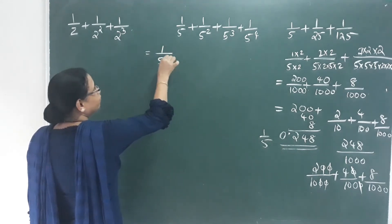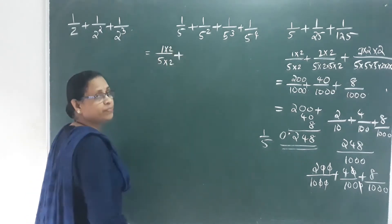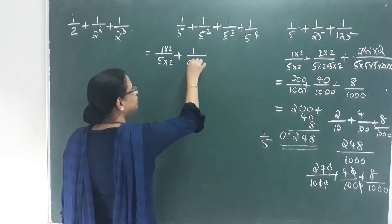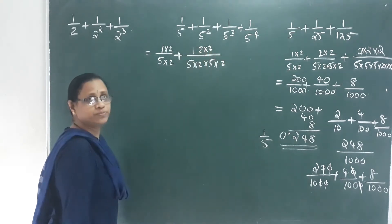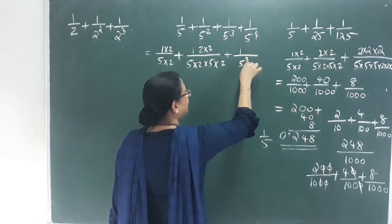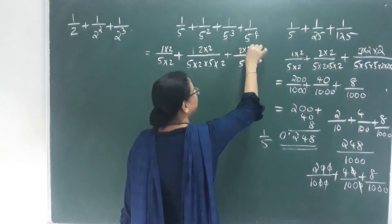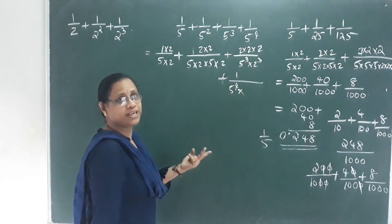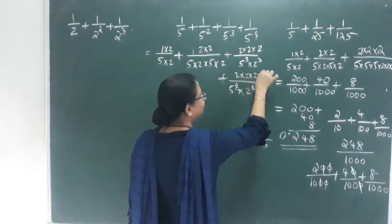Now for 1 by 5. We multiply 2 into 2 — that means 2 into 2. Here is 5 cube, so we multiply by 2 cube. If you change the value, 2 cube is 3 times. Plus 5 raised to 4, so we multiply by 2 raised to 4, which is 4 times — meaning 2 into 2 into 2 into 2 into 2.